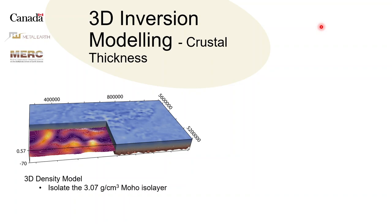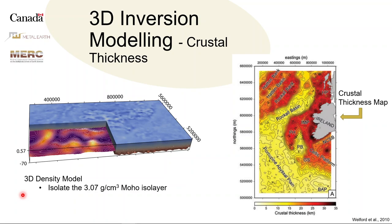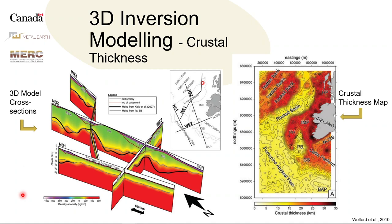From a 3D model where you solve for distribution of density both laterally and vertically, you can pull out a density isotherm — the 3.07 grams per cubic centimeter isotherm that correlates with the MOHO. This modeling was done following the workflow developed by Kim Welford at Memorial University, where you put together these 3D density models, isolate the isotherm that corresponds to the MOHO, and use that to produce crustal thickness maps. Because gravity modeling is notoriously non-unique, you really need some verification. So what Kim did, and what I also did, was use seismic information — from seismic surveys you can pull out the MOHO and verify it against your inversion model's MOHO to make sure they're lining up properly.